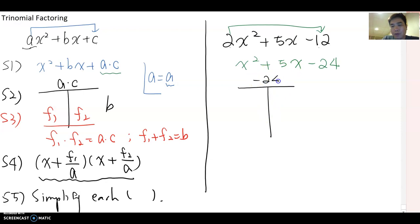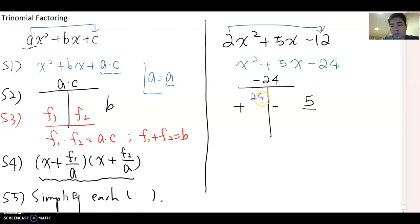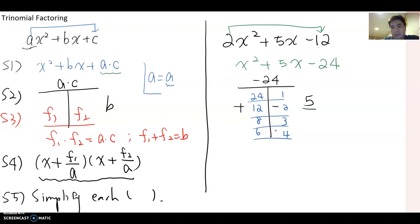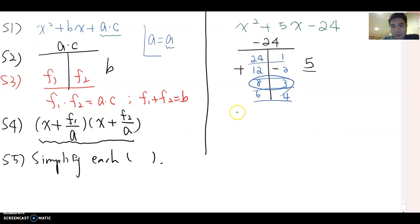Step two: draw the T-chart, putting negative 24 on top and 5 on the side. Since the product is negative, one factor must be positive and the other negative. Because the sum is positive 5, the larger number is positive. Now let's list factor pairs of 24: 24×1, 12×2, 8×3, and 6×4. Which pair gives a sum of 5? That's 8 and 3.